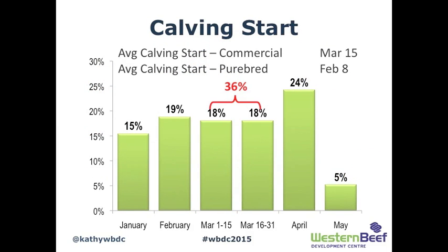In terms of calving start, 36% of producers surveyed were calving in the month of March — split roughly evenly between early and late March. This is an improvement from 1998, when the most common calving start month was actually February. Breaking it out by operation type, average calving start was March 15th for commercial producers and February 8th for purebred producers in the survey.